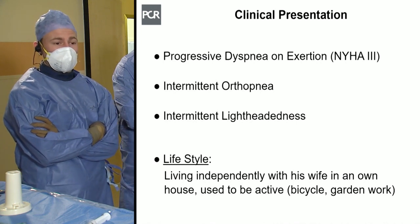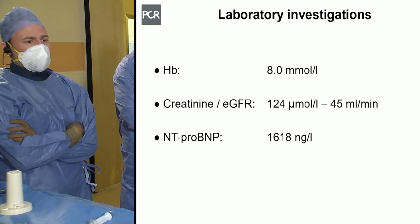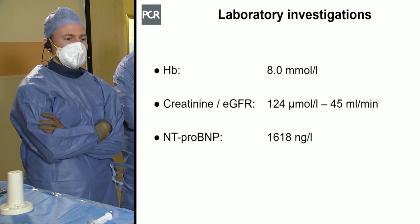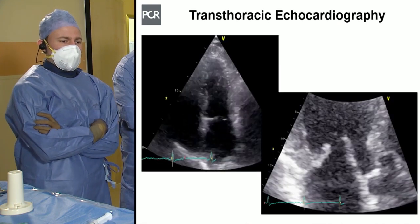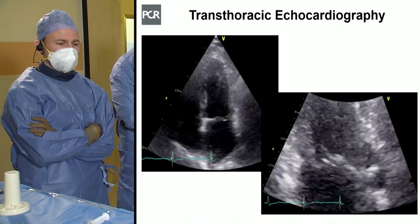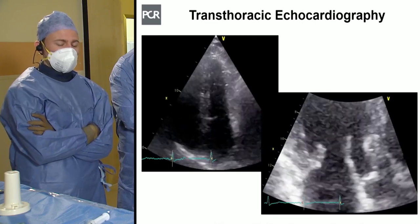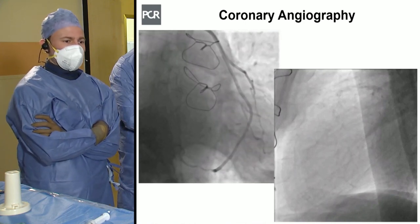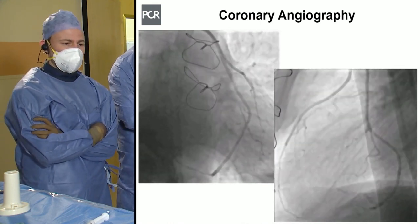He was reporting intermittent orthopnea and lightheadedness. The patient lives independently with his wife and used to be active — riding his bicycle and doing garden work — before dyspnea worsened a couple of months ago. Laboratory values showed mild anemia, eGFR of approximately 45 mL/min, and NT-proBNP elevated at 1,600 nanograms per liter. Echocardiography revealed preserved left and right ventricular function, with evidence of degenerative MR due to prolapse of the posterior mitral valve leaflet. Invasive coronary angiography showed good graft function 16 years after CABG.